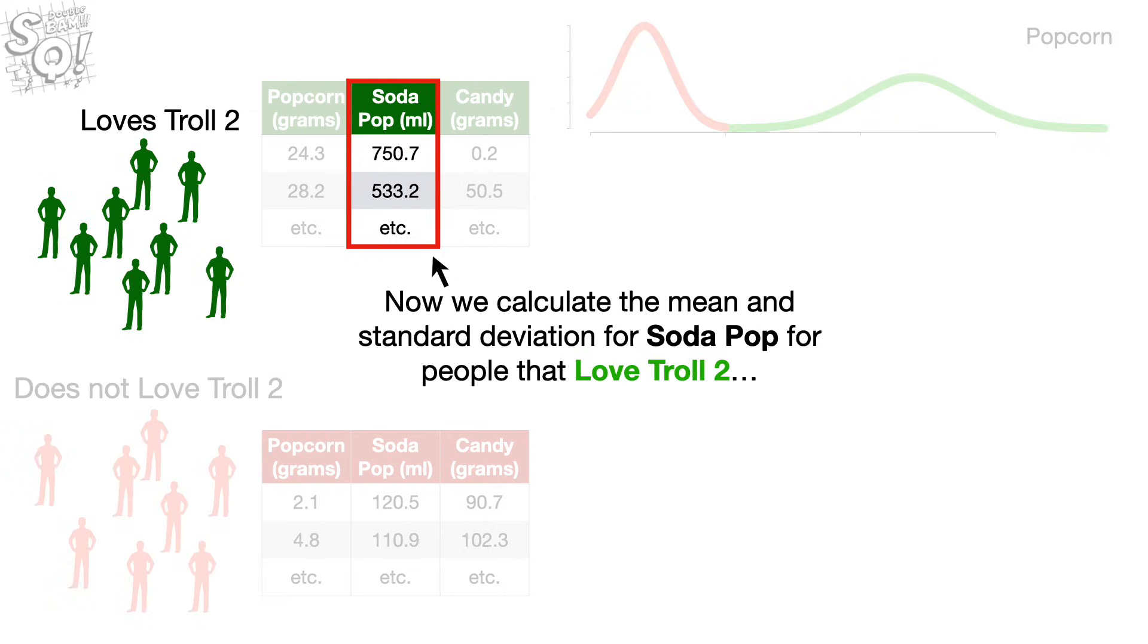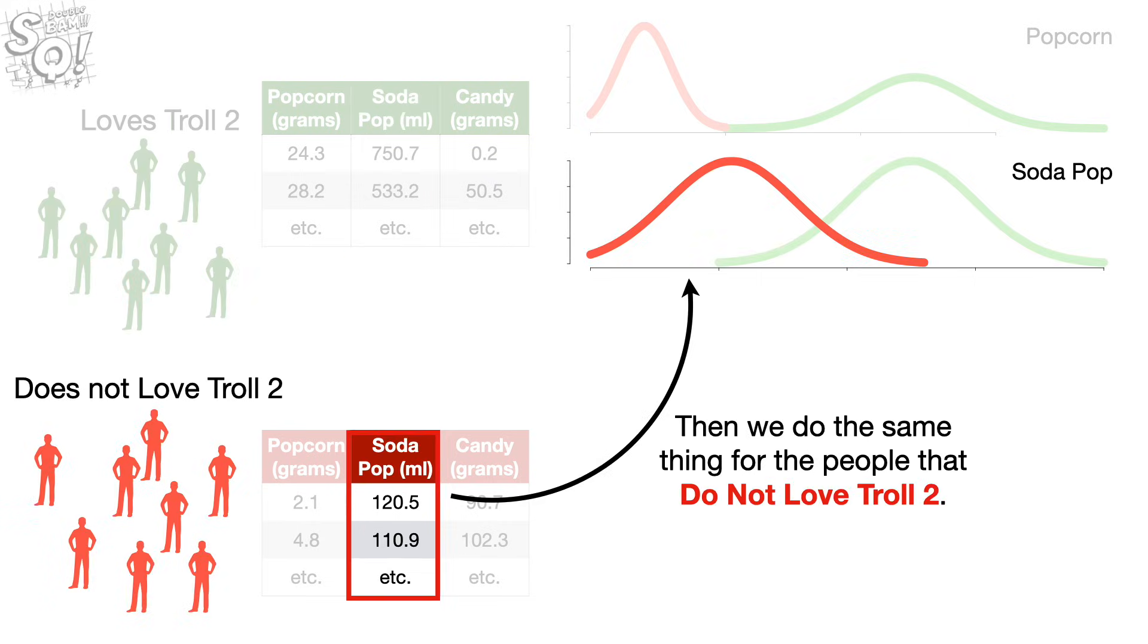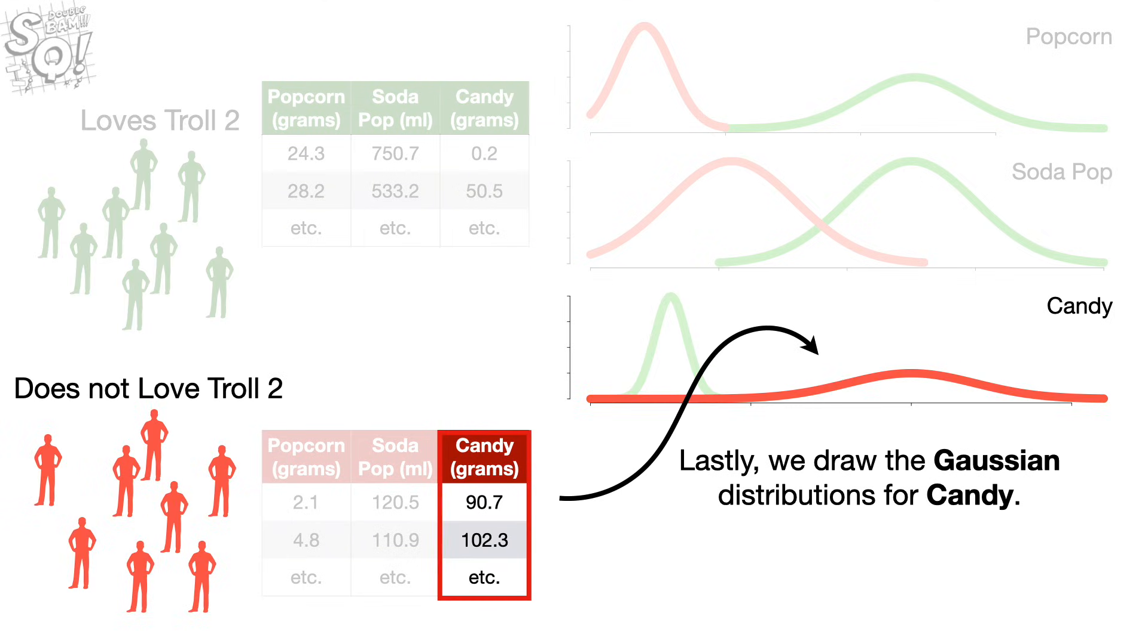Now we calculate the mean and standard deviation for Soda Pop for people that love Troll 2, and draw the corresponding Gaussian distribution. Then we do the same thing for the people that do not love Troll 2. Lastly, we draw the Gaussian distributions for candy.